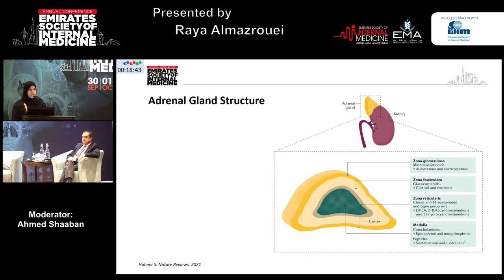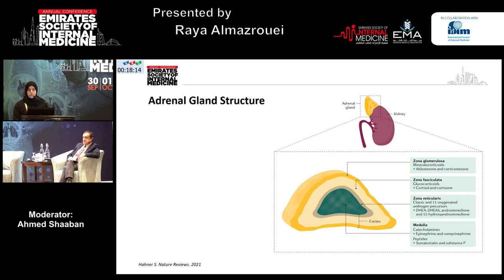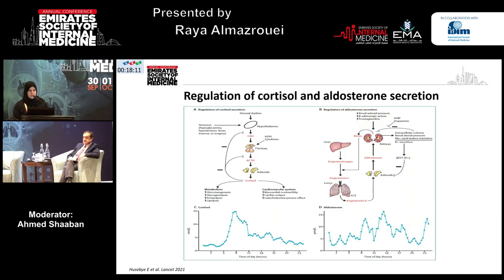Adrenal glands basically consist of a core and cortex. The core is the medulla, which is responsible for the secretion of catecholamines, while the adrenal cortex is divided into three layers. The outermost layer is the zona glomerulosa, where mineralocorticoids are secreted. The innermost layer is the zona reticularis, where adrenal androgens — mainly dehydroepiandrosterone — are produced. The layer in between is called zona fasciculata, where cortisol is synthesized and secreted.